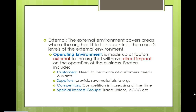The external environment is broken up into two areas: things the organization has some control over but not as much as the internal environment, or things they have virtually no control over. The first is the operating environment — factors that are external to the organization but have a direct impact on it. These include customers, suppliers, competitors, and special interest groups like a trade union or the ACCC.